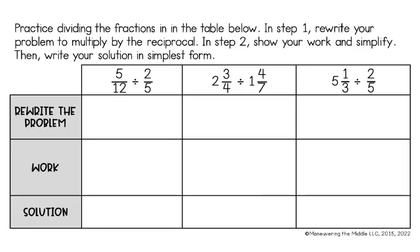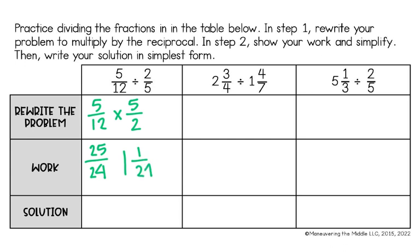Now we are going to practice finding the quotient in the table below. In step 1, rewrite your problem to multiply by the reciprocal. In step 2, show your work and simplify, then write your solution in simplest form. For 5 twelfths divided by 2 fifths: keep the first fraction, change the symbol, flip the second fraction. 5 times 5 is 25, and 12 times 2 is 24. 24 goes into 25 one time with 1 left over, so my final answer is 1 and 1 twenty-fourth.